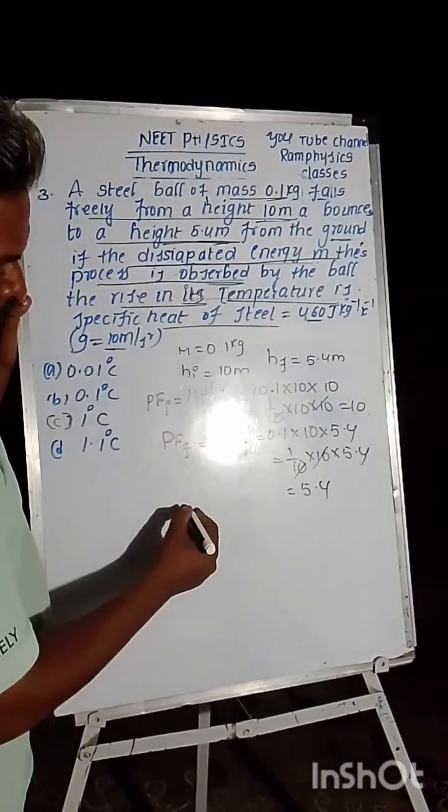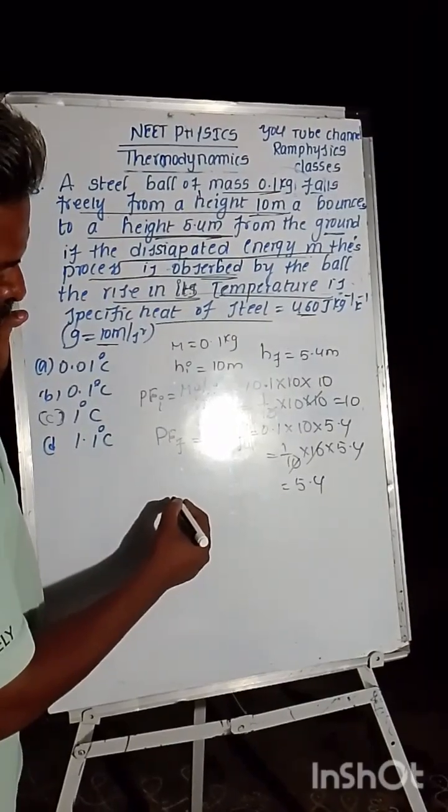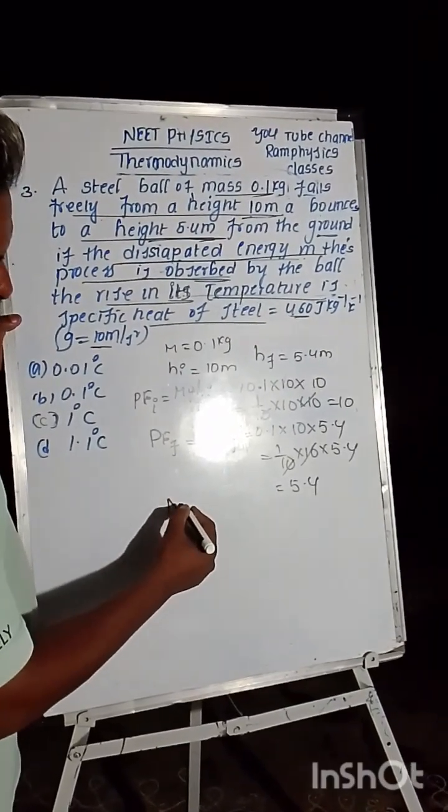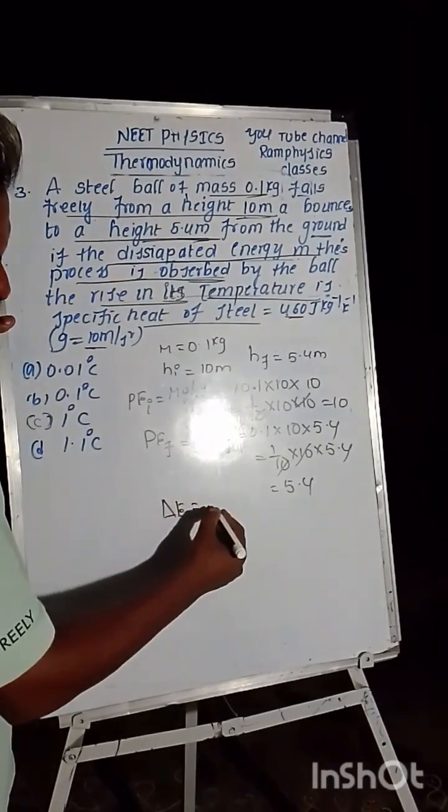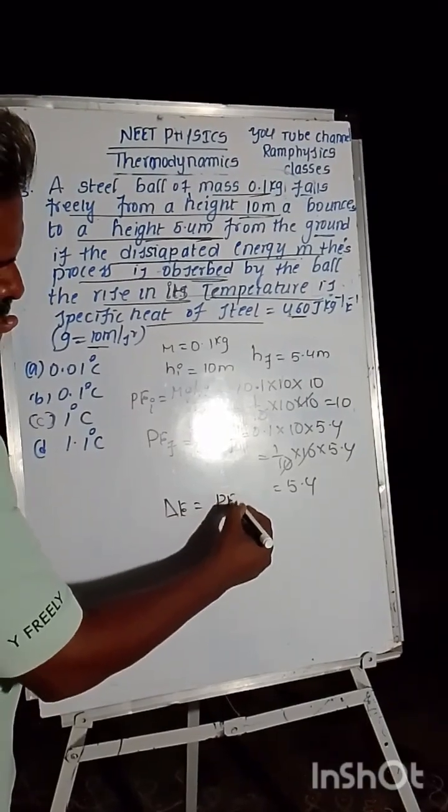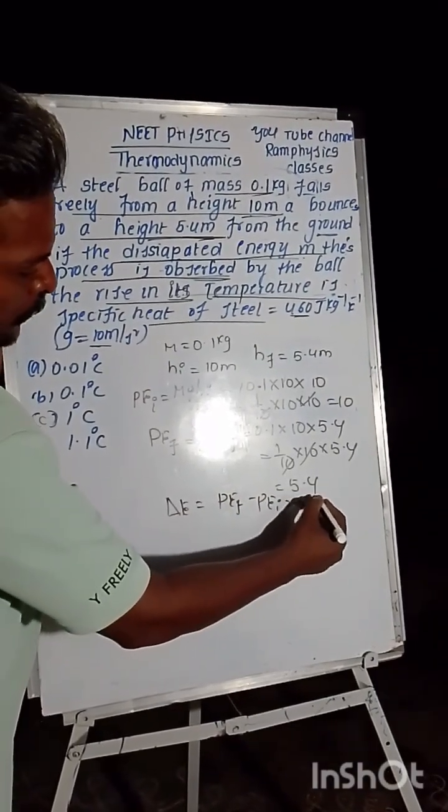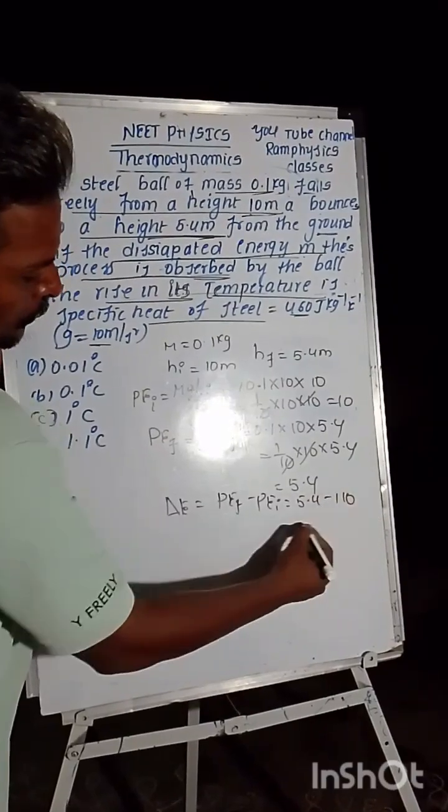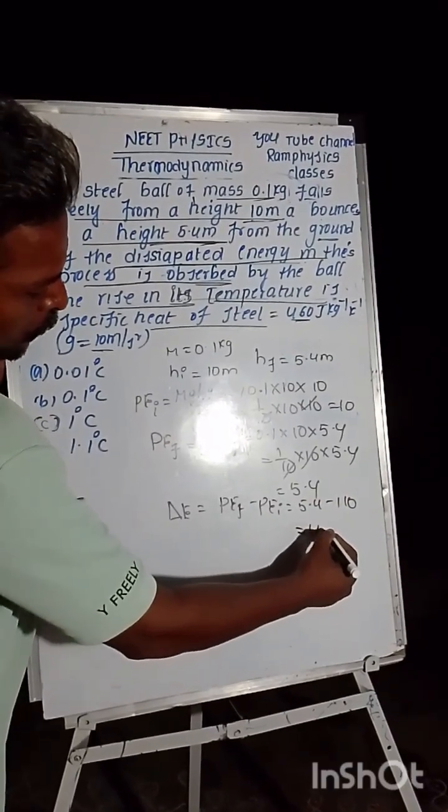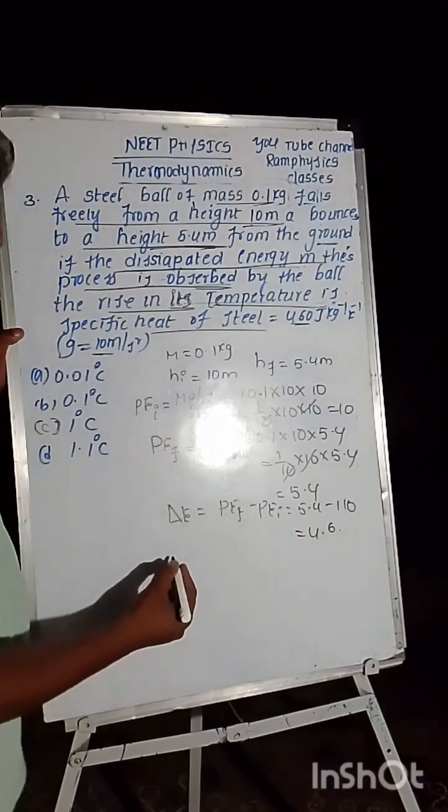And the next one, we have to find the total potential energy change, that is delta E is equal to PE_f minus PE_i. That is equal to 5.4 minus 10, which equals negative 4.6.